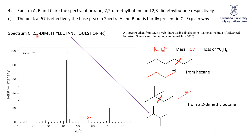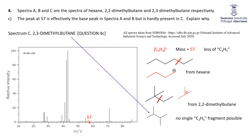In spectrum C, though, we're looking at 2,3-dimethylbutane. Try to find a C2H5 group that you can lose — and the thing is, there isn't one. There's no single C2H5 fragment possible. So very big difference in structures: you've got a C2H5 here and a C2H5 here in the other isomers, but no C2H5 can be lost from 2,3-dimethylbutane. That's why this fragment at 57 is very, very small.